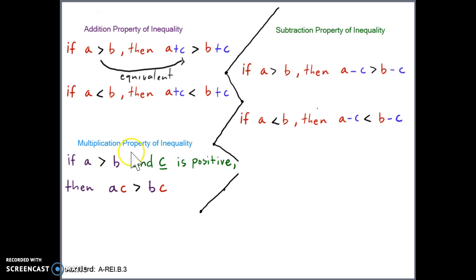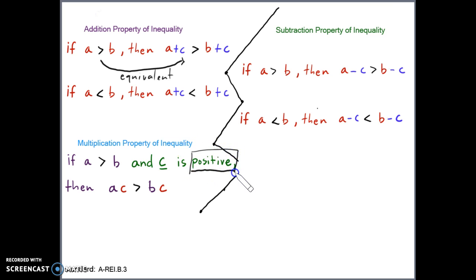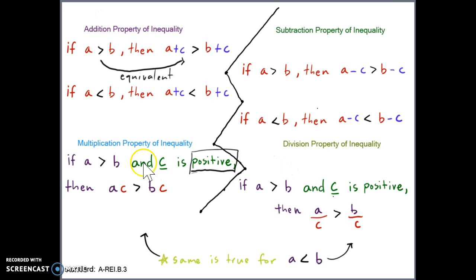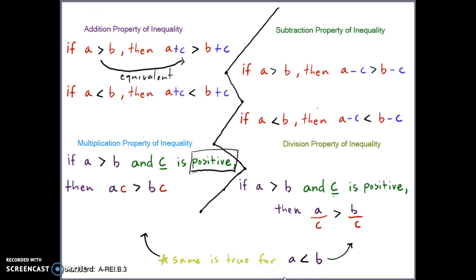Here's where we begin to see the change. With the multiplication property of inequality, if A is greater than B and C is positive, we can multiply C to both sides. The key difference is we're only allowed to multiply positive numbers to both sides. Similarly, with the division property, we can divide both sides by the same value as long as that value is positive — no matter if it's a less than or greater than sign.